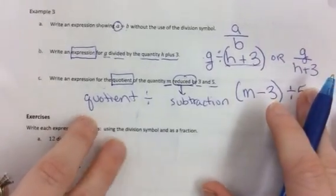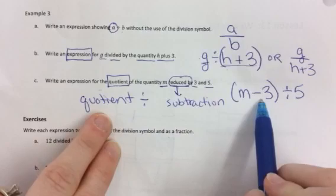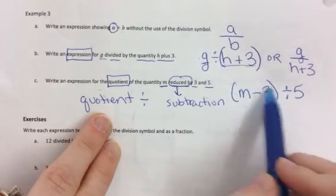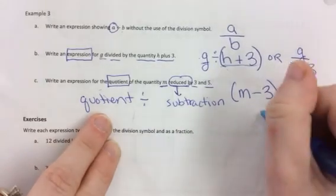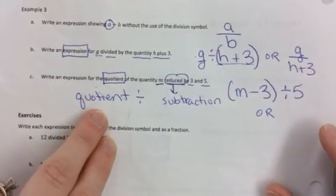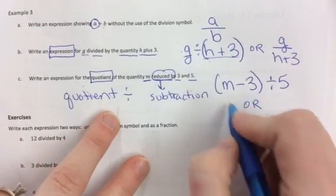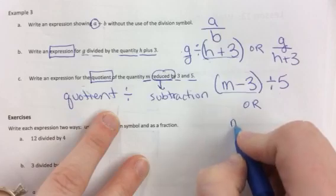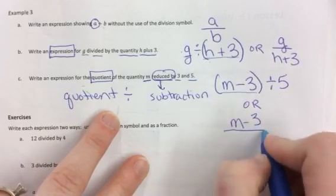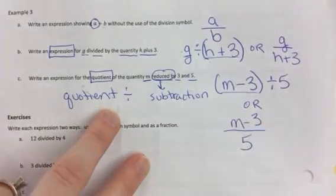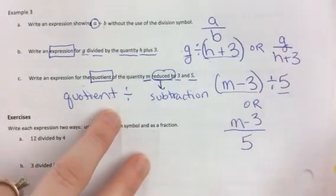That's a little tricky. So m is being reduced by 3. We have to find the quotient of this and 5. Or, could I write this in fraction form? You could. You could write this as your dividend is m minus 3 over your divisor, which is 5.